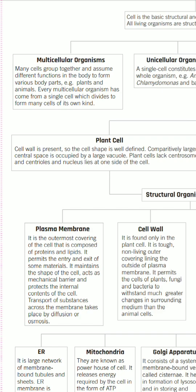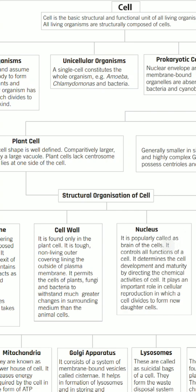The next is unicellular organisms. 'Uni' means one, so those organisms which have only a single cell in their body are called unicellular organisms. A single cell constitutes the whole organism - for example, Amoeba, Chlamydomonas, and bacteria. Most bacteria are unicellular organisms. So if a fill-in-the-blank or match-the-column question comes asking about unicellular organisms, remember all bacteria have a single cell.